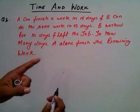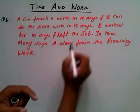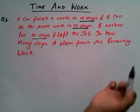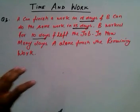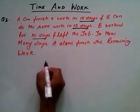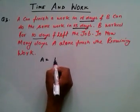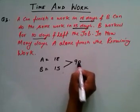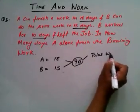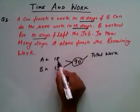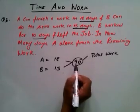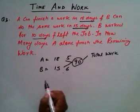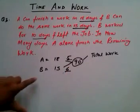The third and last question: A can finish a piece of work in 18 days, B can do the same work in 15 days, and B worked for 10 days and then left the job. In how many days will A alone finish the remaining work? We take the LCM of 18 and 15, which is 90, and this is the total work. Dividing 90 by 18 gives A's one day work, which is 5. Dividing 90 by 15 gives B's one day work, which is 6.